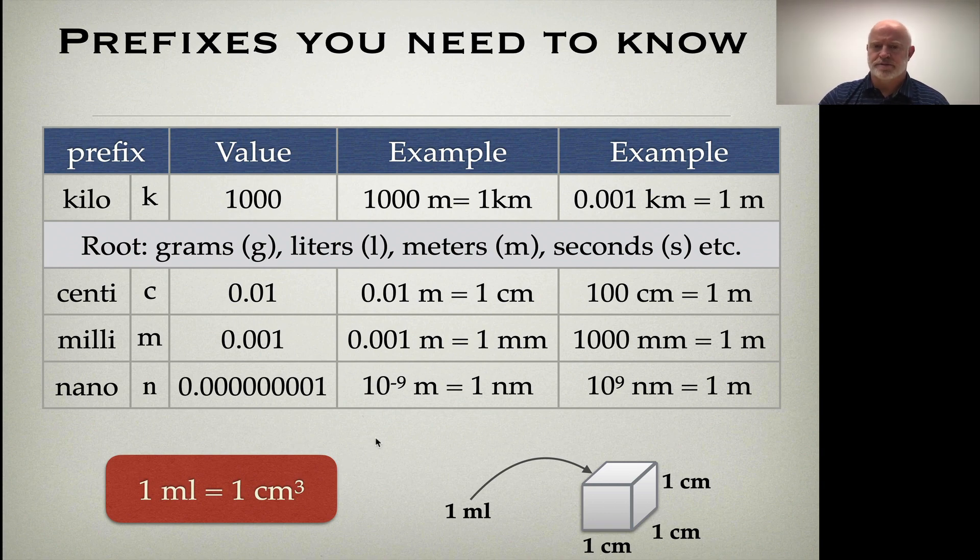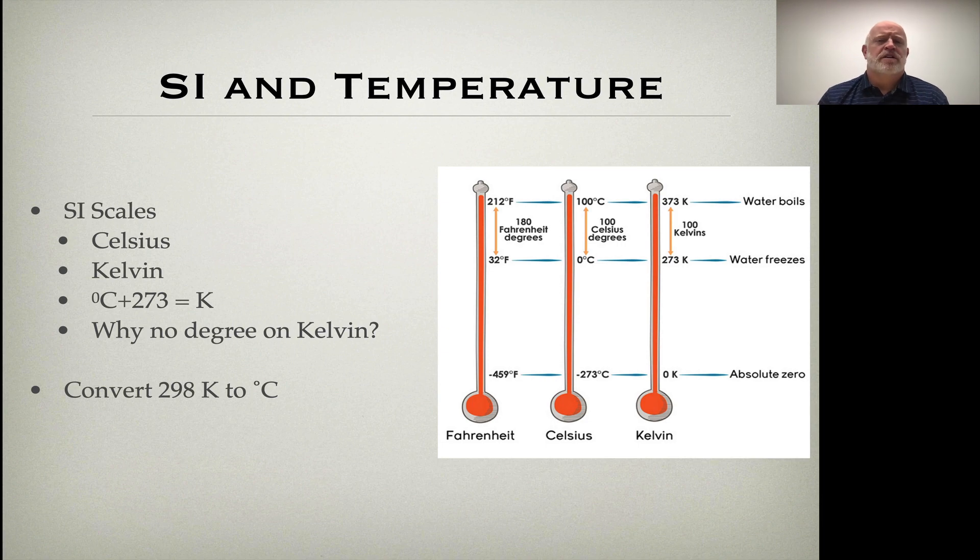Now temperature is interesting in the SI system because the SI system uses two scales for temperature, not just one. We use Celsius and Kelvin. They're the same scale, which means they mean the same thing in terms of their increments. If we look over here where water boils, Celsius is at 100, and where water freezes, Celsius is at zero. That's where the Celsius scale came from. The problem was the coldest temperature that an atom could ever reach was negative 273.